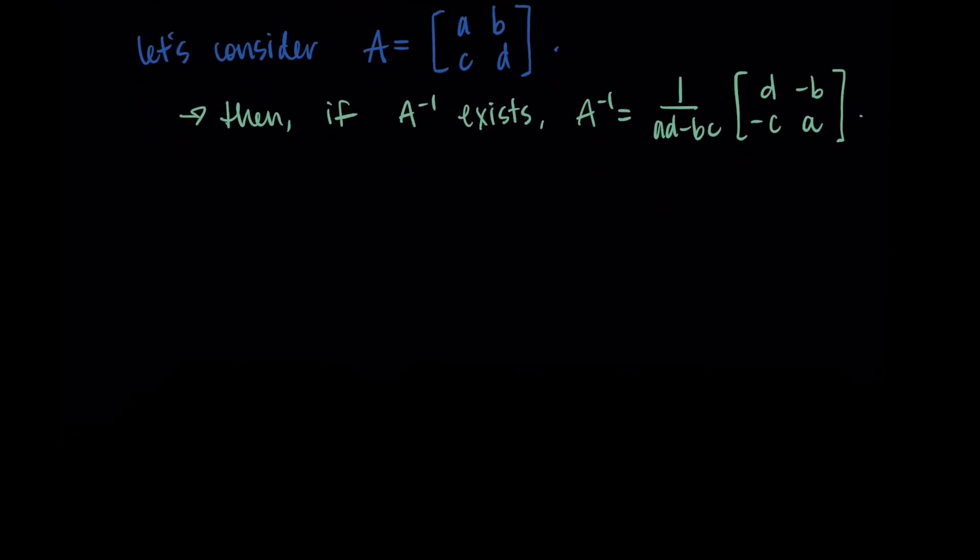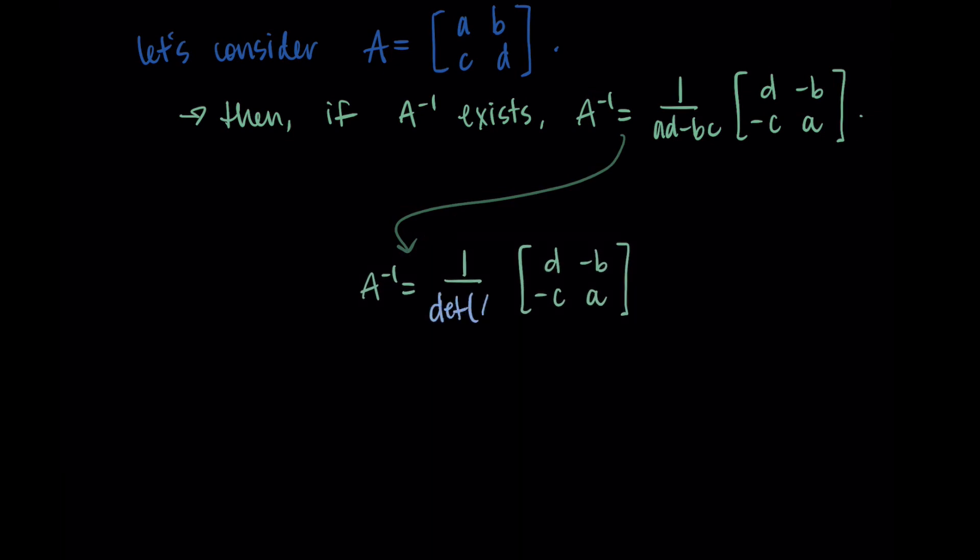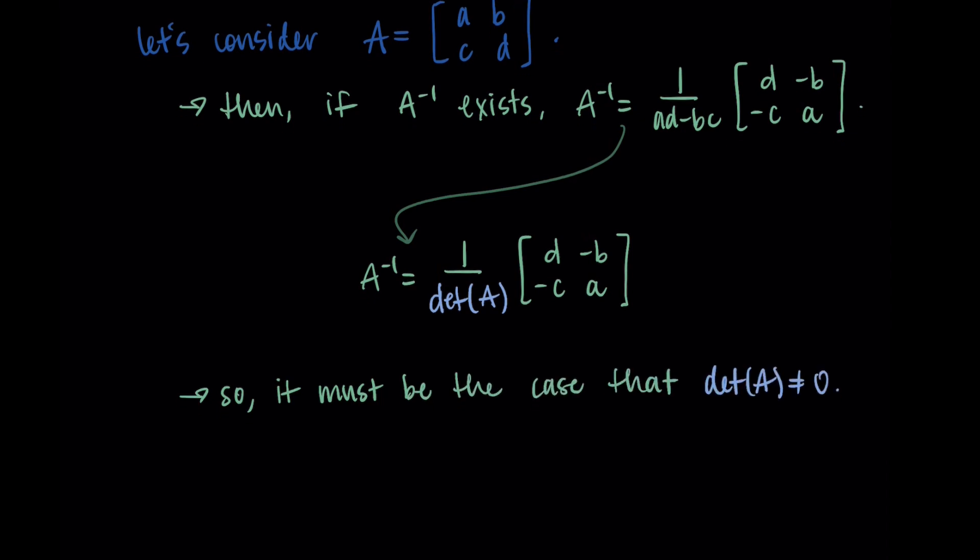So this was our shortcut for finding the two by two inverse. So if this inverse exists, what we have on the outside here is one over AD minus BC. And that AD minus BC is specifically our formula for the two by two determinant. So we really have one over the determinant of A times our new matrix. So if this inverse exists, we'd need the determinant of A to be something that we can divide by, so it cannot be zero.